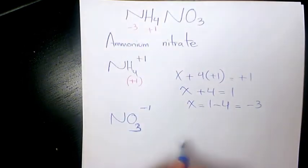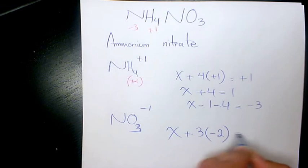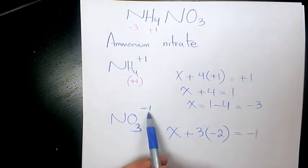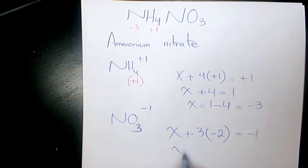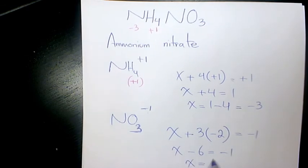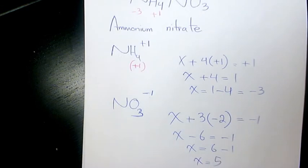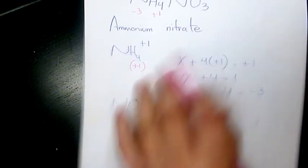Oxygen is negative two, so for nitrogen again I'm going to have X plus three times negative two equals negative one, which is the charge of the ion. So X minus six equals negative one, which means X equals negative one plus six, so X equals five.